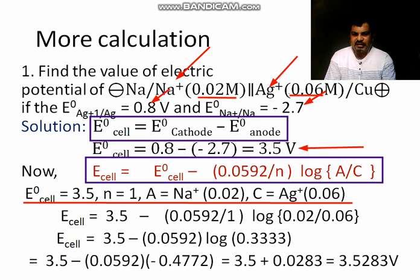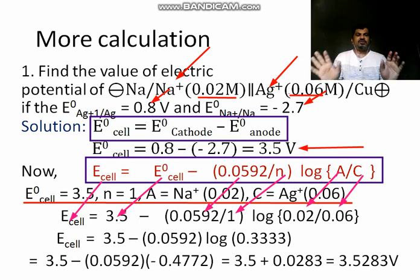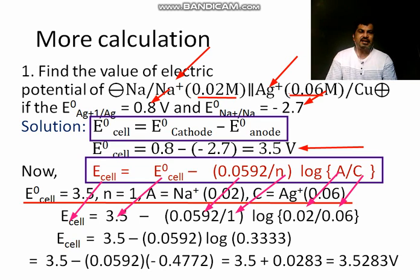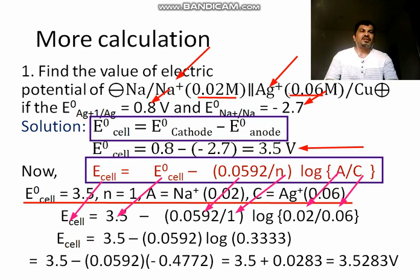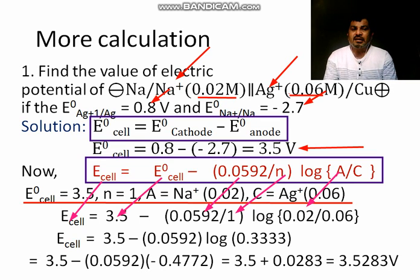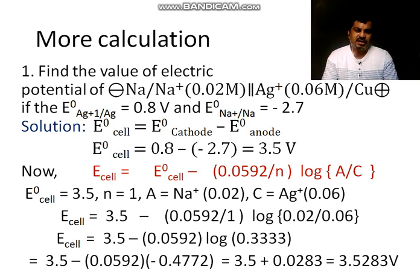For example E degree cell, E degree cell we have values 3.5. So we are putting here 3.5. Then 0.0592 remain as it is and the value of N we get 1. Now the calculation is your part. Finally log 0.02 divided by 0.06 is 0.333. So dear students this is our final answer electrical cell potential 3.5283 volts.